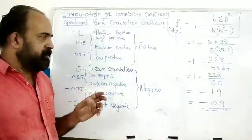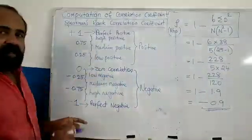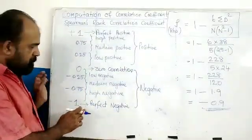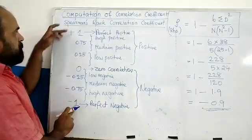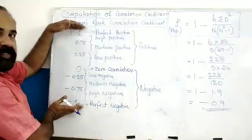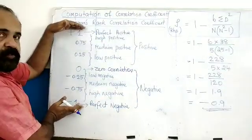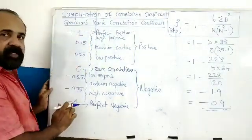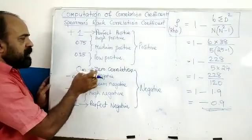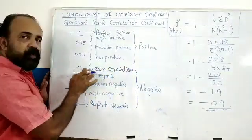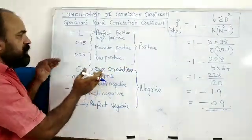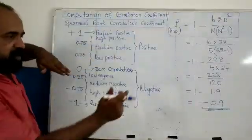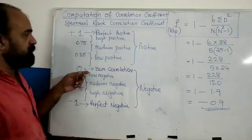The value of Rho ranges from minus 1 to plus 1, including 0. This is the number line. A value of 0 means no correlation. The positive side ranges from 0 to positive 1, which indicates positive correlation. From 0 to 0.25 is the range of low positive correlation.